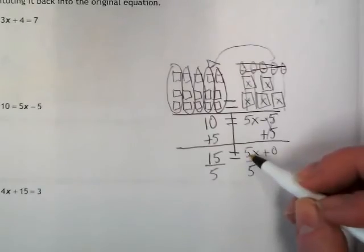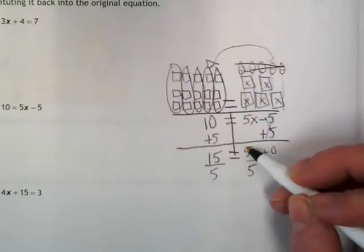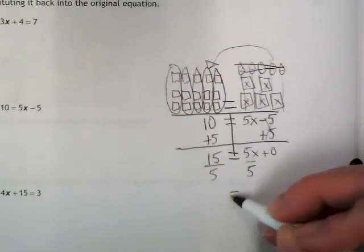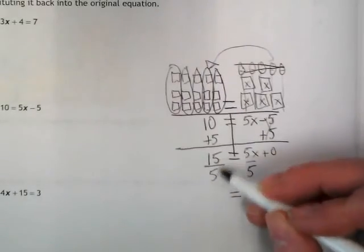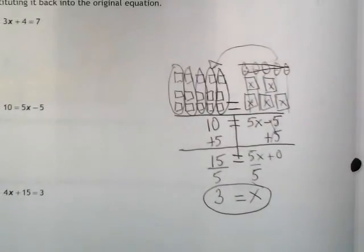So what happens math-wise, though, this 5 divided by 5 is an invisible 1. So we're going to say it equals x. 15 divided by 5 is 3, and that matches what we showed up here visually.